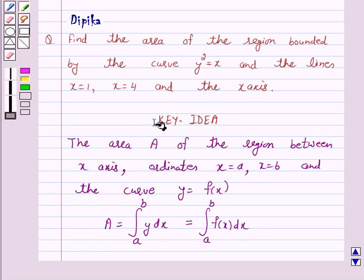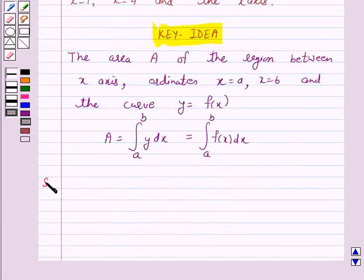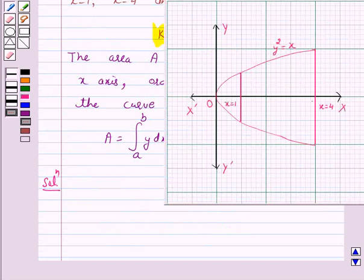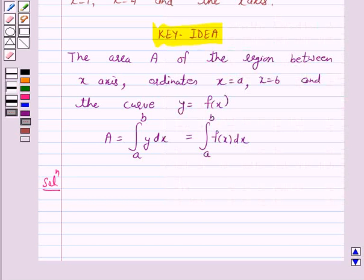We will take the help of this key idea to solve the above question. So, let's start the solution. Now, first of all, we will draw the figure and identify the region whose area is to be found out. Now, y² = x is a parabola with vertex at origin and it is symmetrical about the x-axis. Also, x = 1 and x = 4 are lines parallel to the y-axis. Thus, we have to find the area of this shaded region.